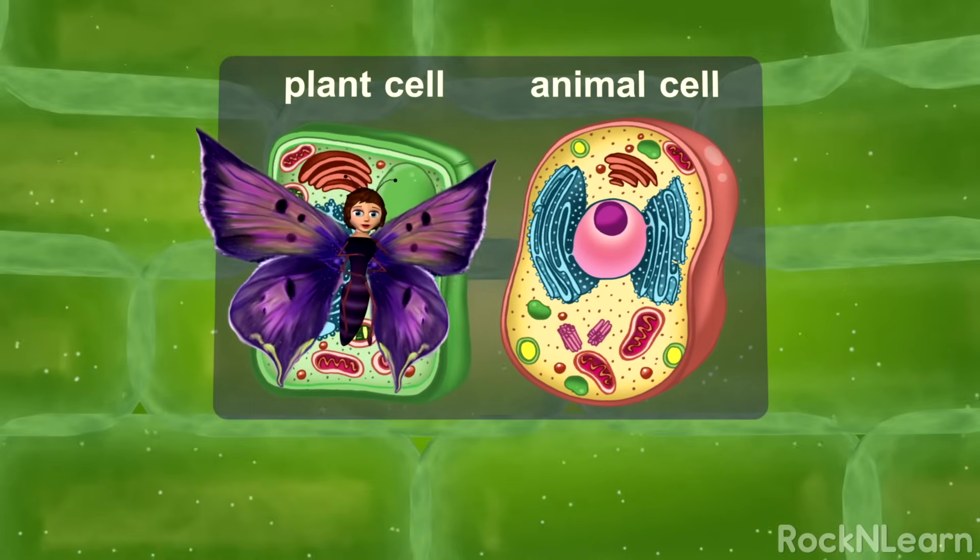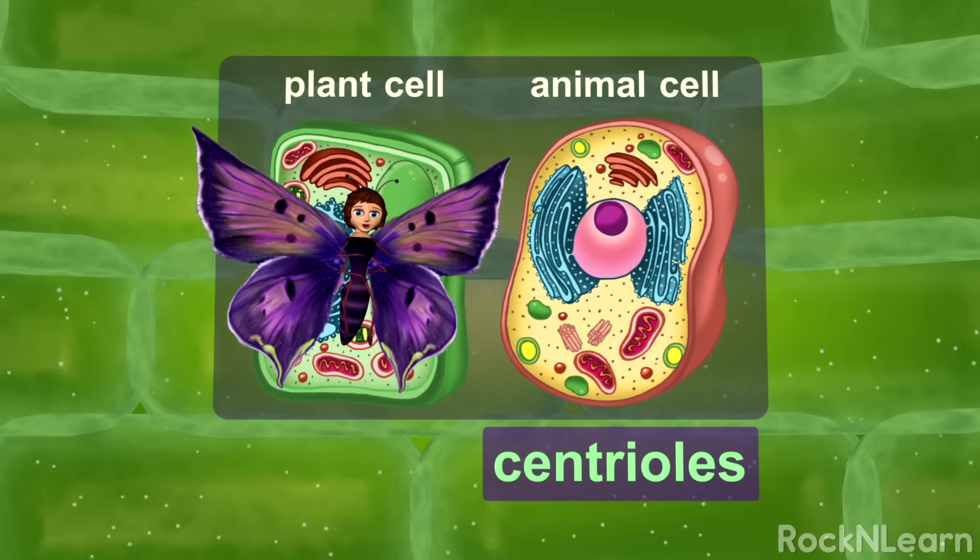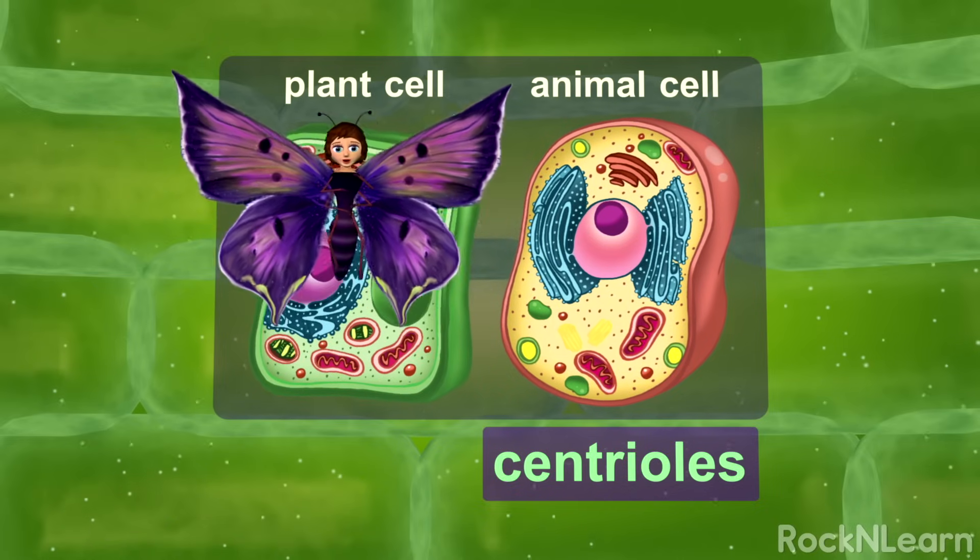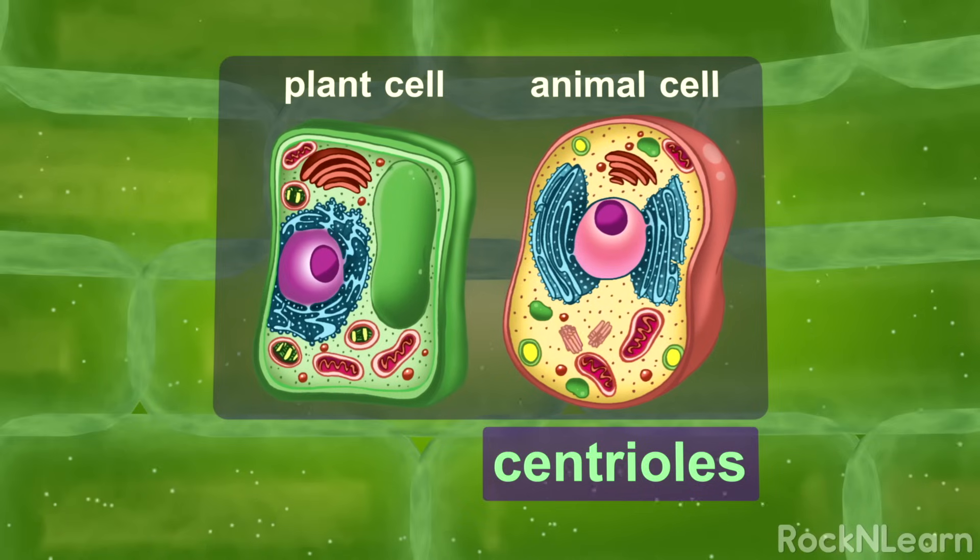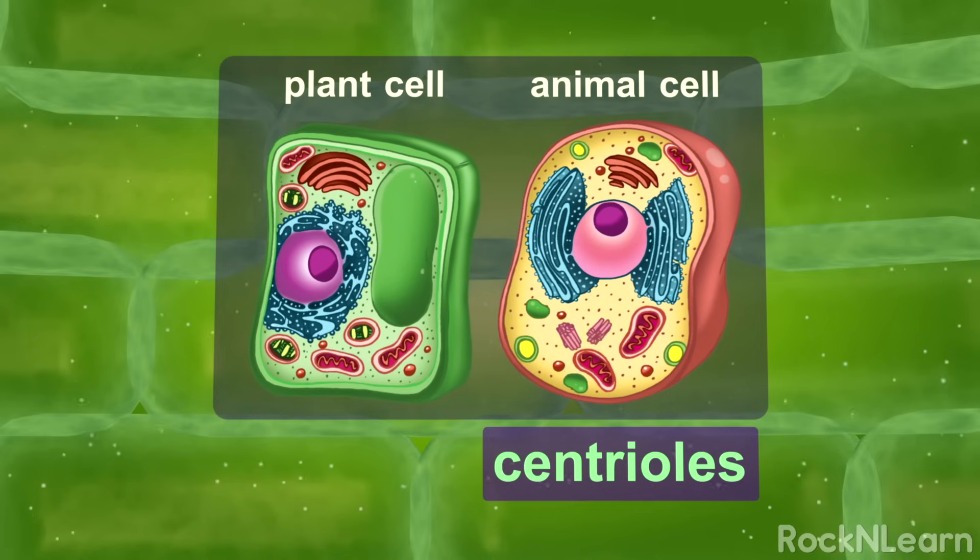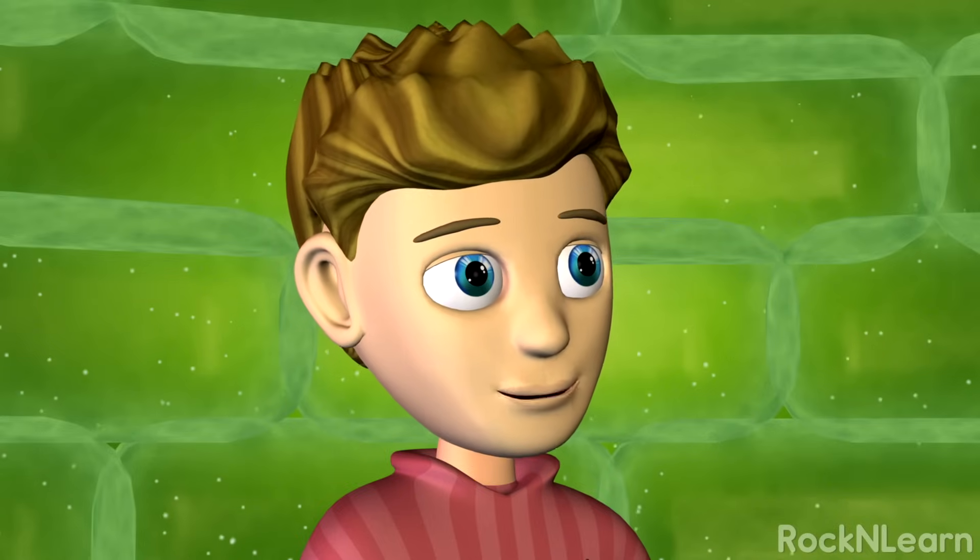Only animal cells have organelles called centrioles, which aid in cell division. Animal cells have two centrioles that are perpendicular to each other. That means they're at right angles to each other.